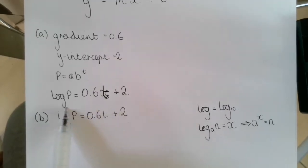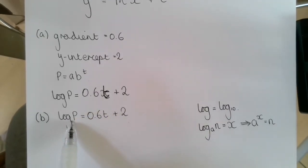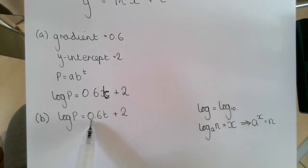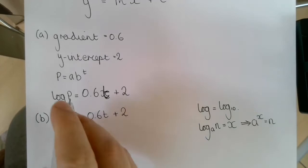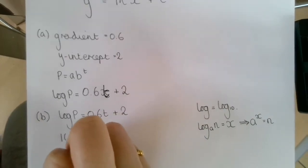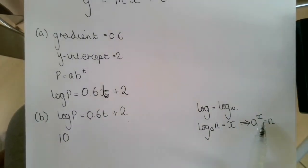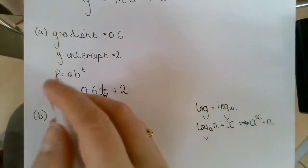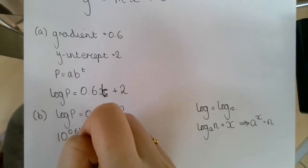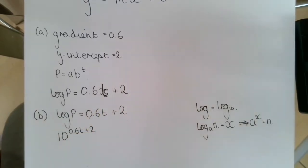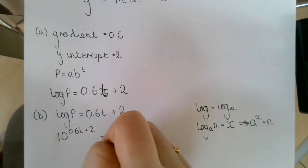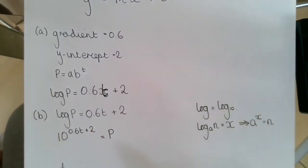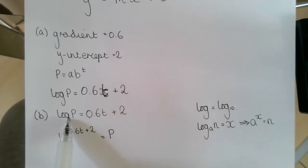And we know that log base a of n equals x implies that a to the power of x equals n. So this equation here, we've got log base 10 of p is equal to this expression in terms of t. So our base is 10. We're raising 10 to the power of this 0.6t plus 2.